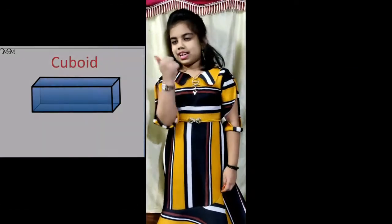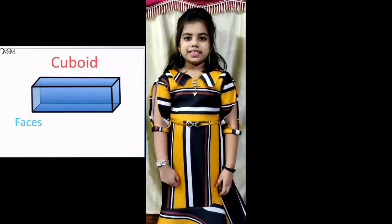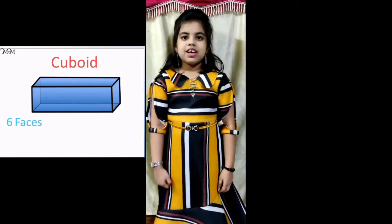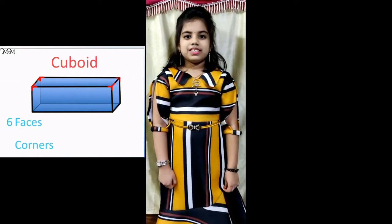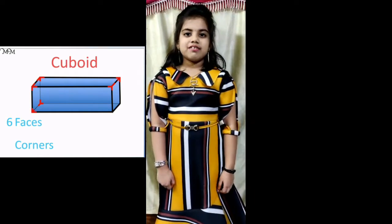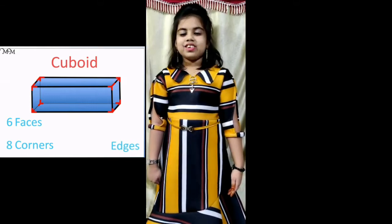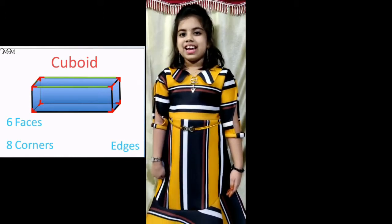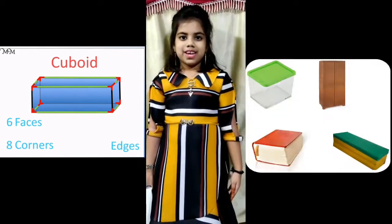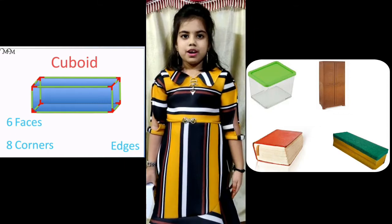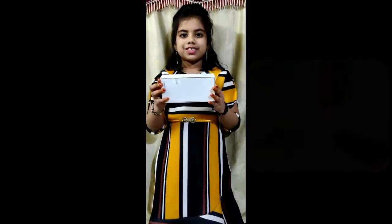The second one is a cuboid. A cuboid has 6 rectangular faces where opposite faces are equal. It has 8 corners and 12 edges. Examples of a cuboid are a book and a box.